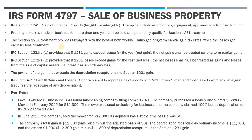Section 1231 treatment is the best of both worlds because the gains are effectively taxed at long-term capital gains rates, while any losses can get ordinary treatment. That works out best for most taxpayers — if you have a loss you want it to be ordinary because it can offset other ordinary income, but if you have a gain you want the lower preferential long-term rates. When a gain exceeds the depreciation recapture, that excess amount is the 1231 gain.